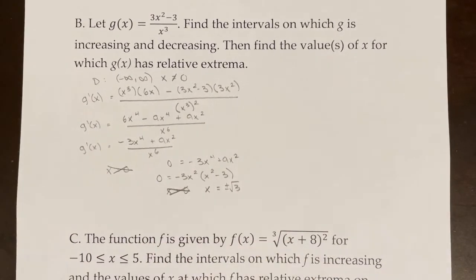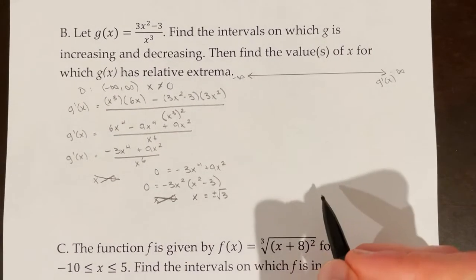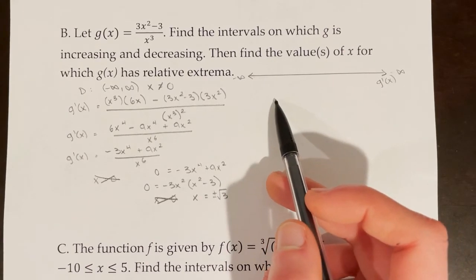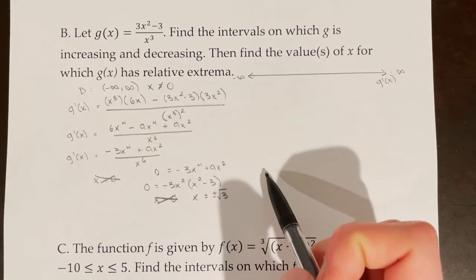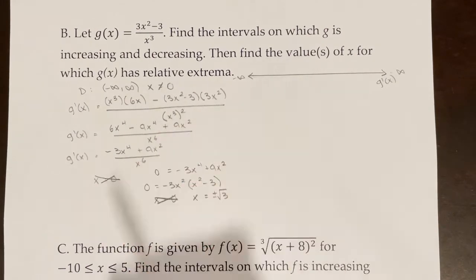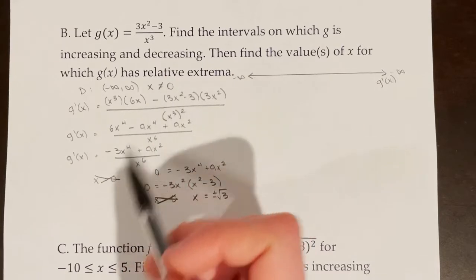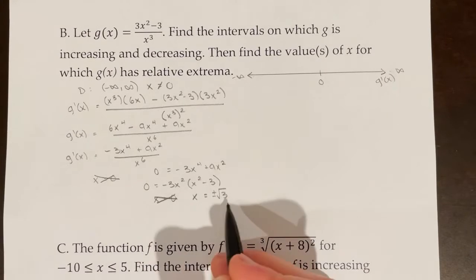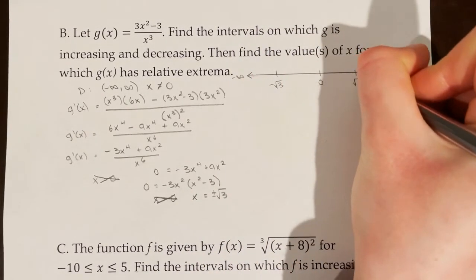Now I will make my sign chart. Two important things: first, a sign chart alone does not earn credit on the AP exam — you need an additional explanation. Second, domain issues also go on your sign chart. So even though x equals 0 is not a critical point, because it is a domain issue, we still put 0 on the sign chart. We also put the critical points negative rad 3 and rad 3 on the sign chart.